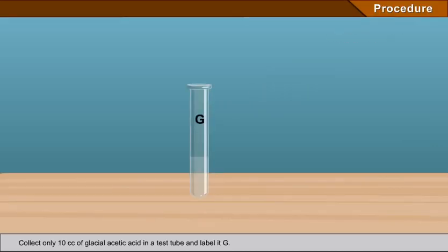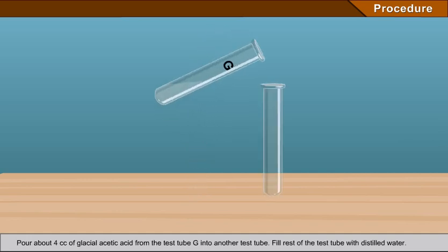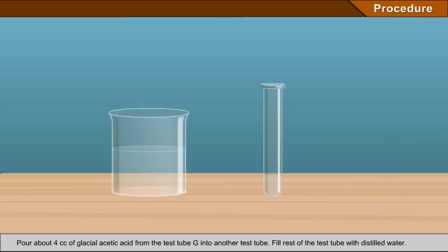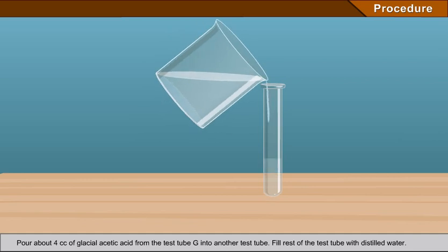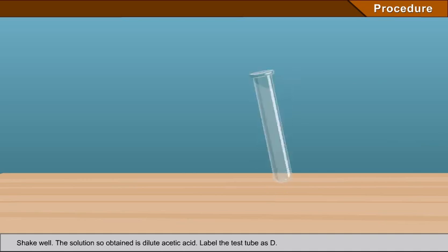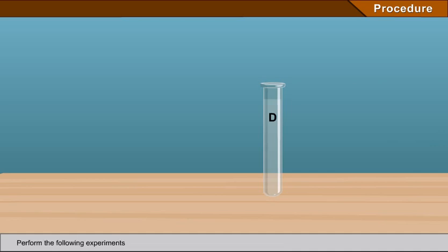Procedure: Collect 10 cc of glacial acetic acid in a test tube and label it G. Pour about 4 cc of glacial acetic acid from test tube G into another test tube. Fill the rest of the test tube with distilled water and shake well. The solution so obtained is dilute acetic acid. Label the test tube as D.